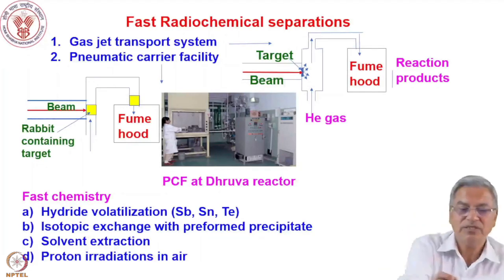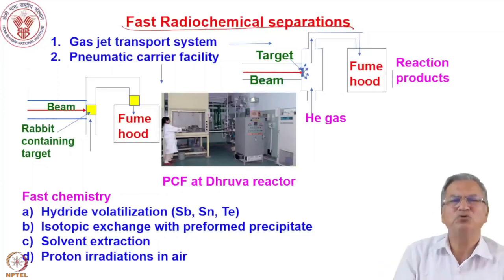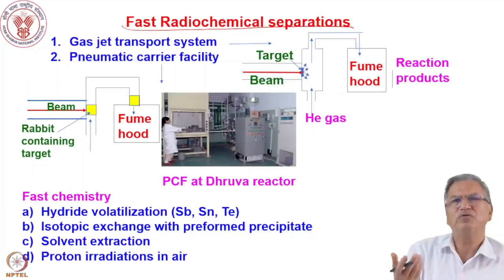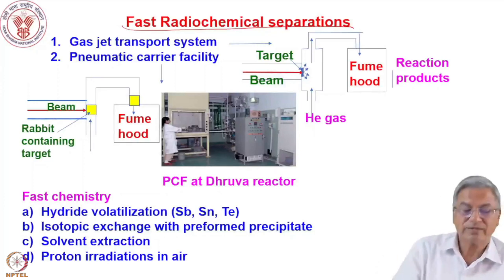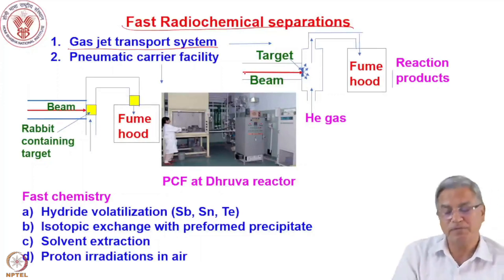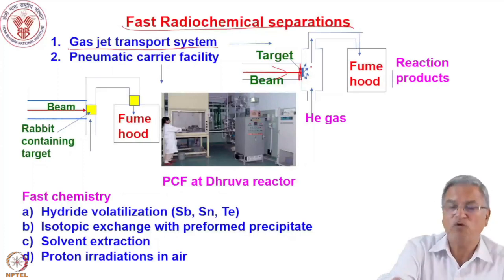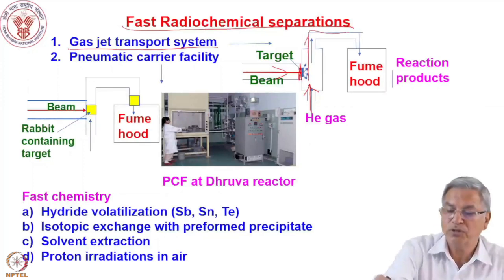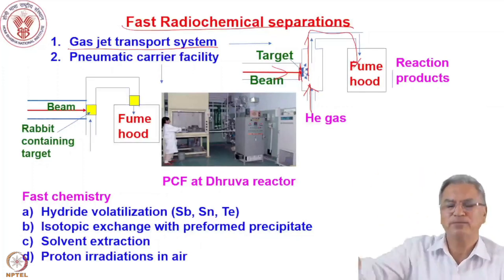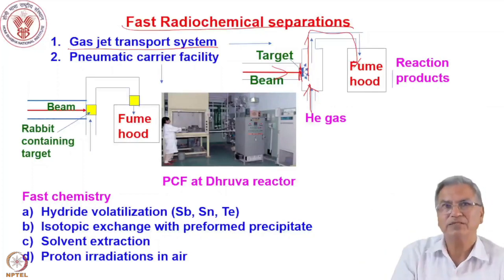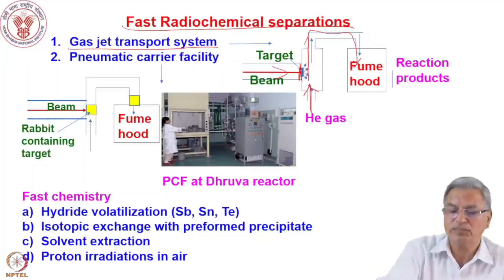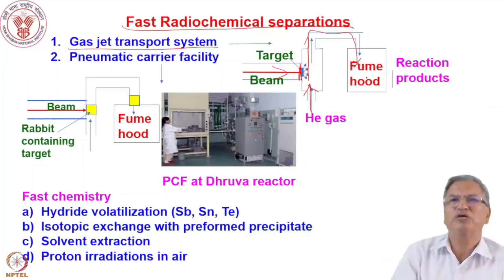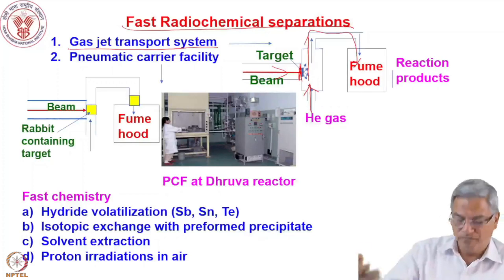For fast radiochemical separations — when half-lives are seconds, milliseconds, or even less than a minute — there are techniques like the gas jet transport system. In a gas jet system, a beam hits a thin target in a chamber and helium gas is passed through the chamber to transport all reaction products pneumatically to the fume hood, where products can be collected in solution for chemistry. The transport time for reaction products from the accelerator to the fume hood is a few seconds — one or two seconds — and then very fast chemistry apparatus can be used.